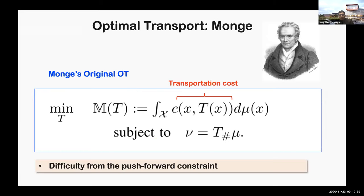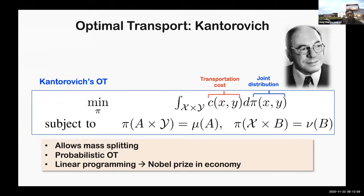Monge's original formulation of optimal transport is defined by the minimization of average transportation cost with respect to the transportation map T under the push-forward constraint. However, this problem is difficult to solve due to the non-linearity of the push-forward constraint. To address this, Kantorovich relaxed the optimal transportation problem with a probabilistic formulation. Instead of directly minimizing with respect to T, Kantorovich estimates the joint probability distribution phi that minimizes the average transportation cost. This allows mass splitting and leads to a linear programming problem for the discrete case — Kantorovich received the Nobel Prize in Economics for this discovery.